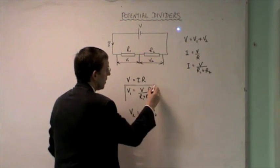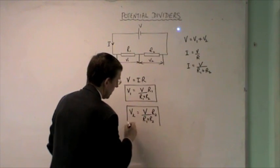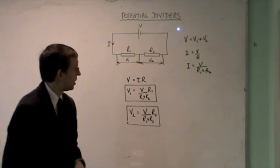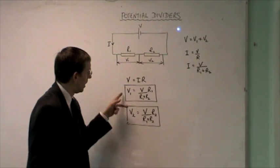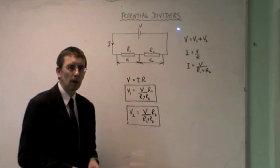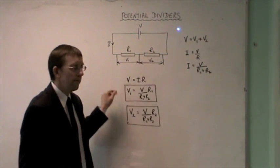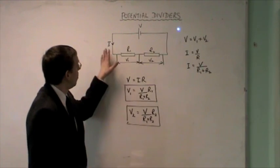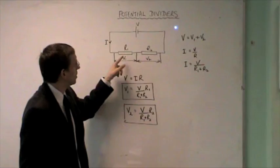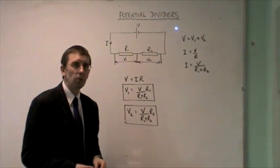So if you want to learn a formula to solve potential divider problems, these are the formulas that you need to use. Alternatively, you can simply use V equals IR, work out the current and then use what you know about current voltage and resistance to calculate the voltage from first principles.